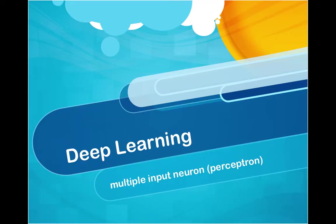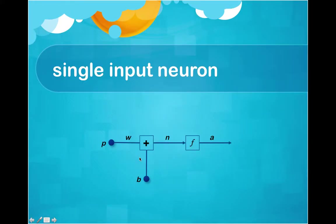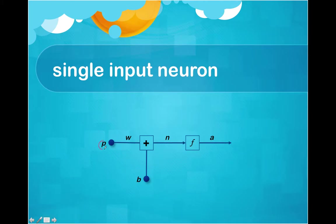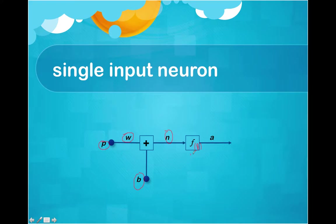In this video I'm going to talk about multiple input neuron, which we call a perceptron. This is a single input neuron that I talked about in the previous video. In the single input neuron, we have P as input and we multiply P with W and add bias, so the net input is WP plus B. This net input goes to the activation function, and if n is below the threshold then the activation function returns a lower value, and if n is over or equal to the threshold then it returns a higher value.